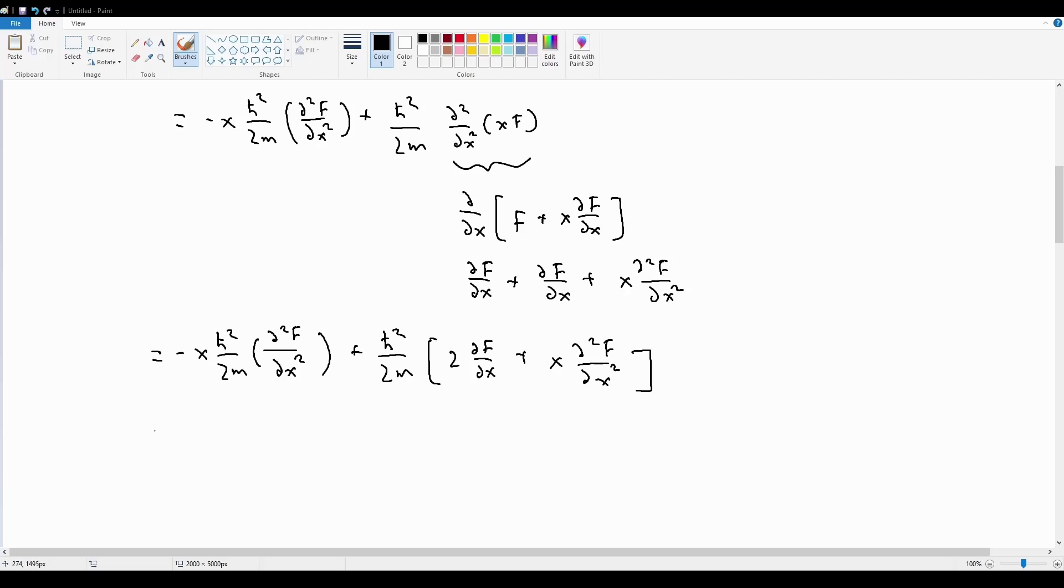After distributing this over into everything, this term and this term just cancels. So what we have left is h-bar squared over 2m times 2 df by dx, in which case this 2 and this 2 cancels, we have h-bar squared over m df by dx.